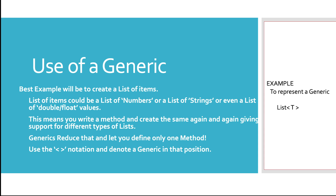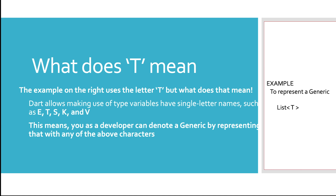In the type here, you could just give a single letter called T. What does the T mean? In Dart, we represent a generic type using T. There are different letters that are also accepted — single characters like E, T, S, K, and V. You could use any of these and Dart will automatically understand that you're trying to represent a generic there, when you put it inside the angular brackets.